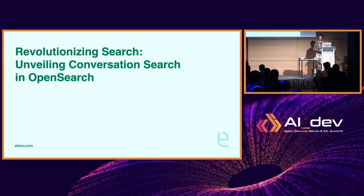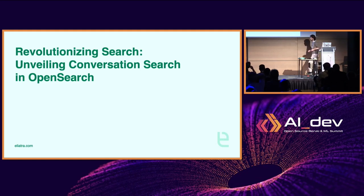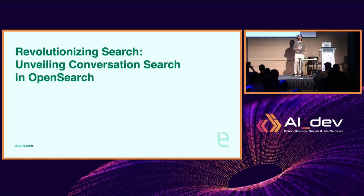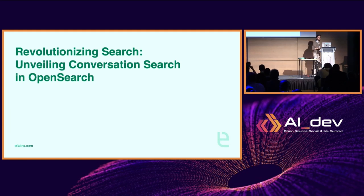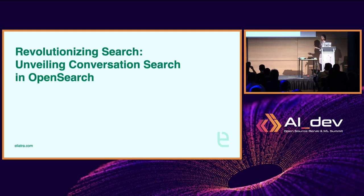I'm here today to talk to you all about conversational search, which has many names, but is the name OpenSearch uses for its implementation of LLMs and embedding services on documents and objects that exist in that database. It's essentially linking in your LLMs, your conversational chatbots, your embedding models, and everything into your data that exists on OpenSearch, to get the most out of your data when it comes to AI.